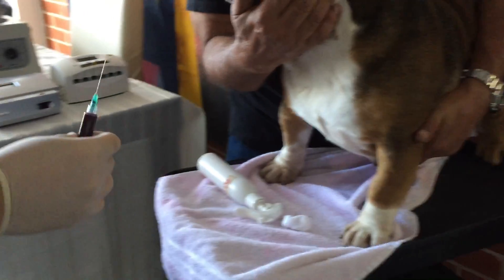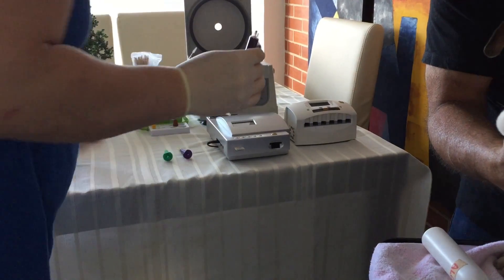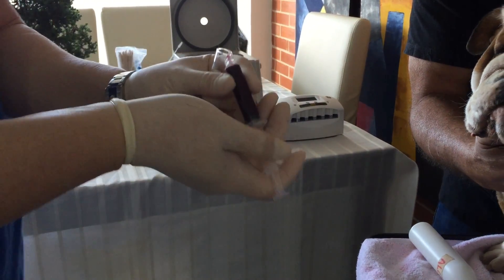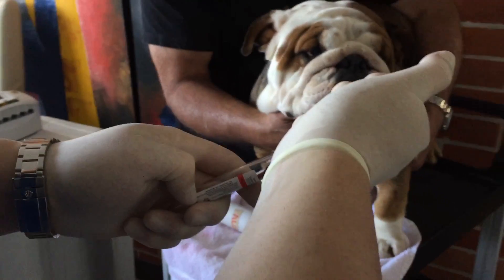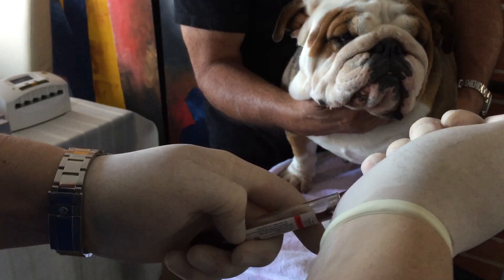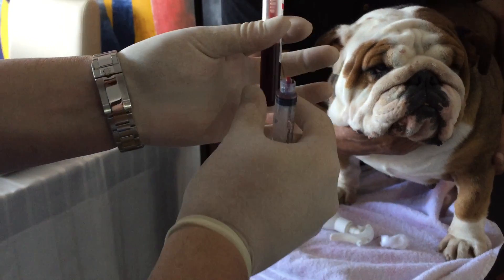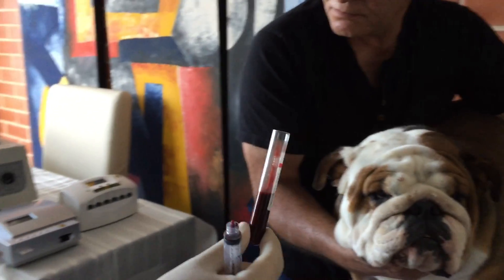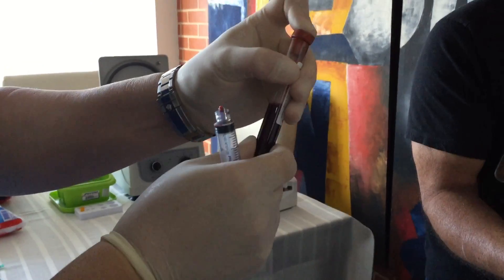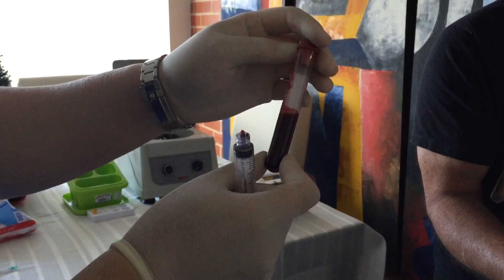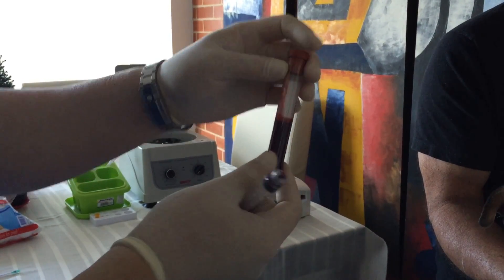So now we're gonna do the progesterone test. You want to slide down the blood really slow down the side of the test tube. Alright, so we have the 5cc, and now I let it sit for about 10 to 15 minutes. The more you let it sit, the better serum you're gonna get. So I wait until it coagulates and we're gonna run the test.